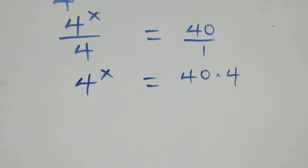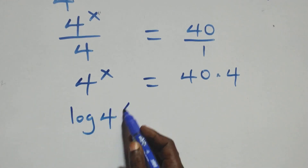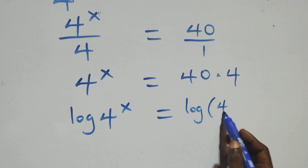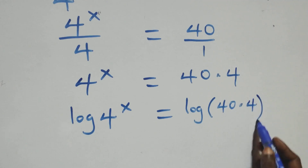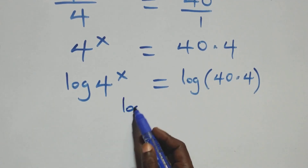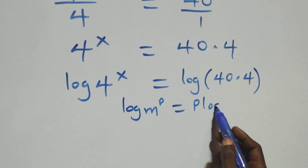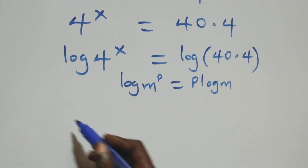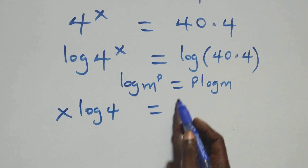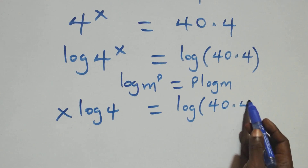The next step: we take the log on both sides. We have log of 4 raised to power x equals log of 40 times 4. We apply the power rule of logarithm: when we have log n raised to power p, this is the same thing as p log n. So this becomes x log 4 equals log(40 × 4).